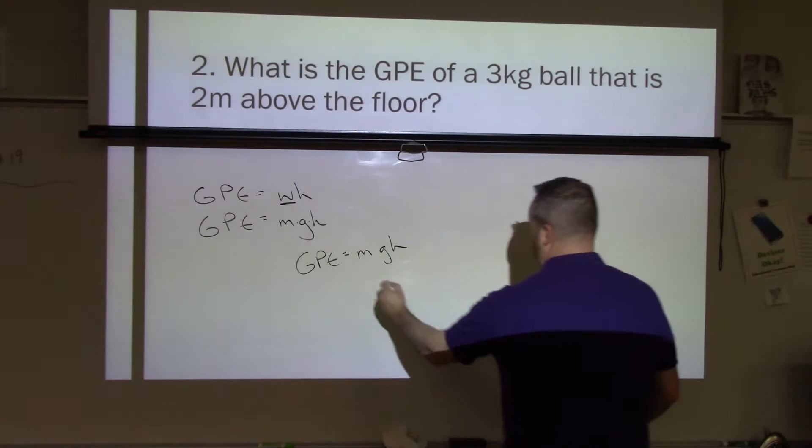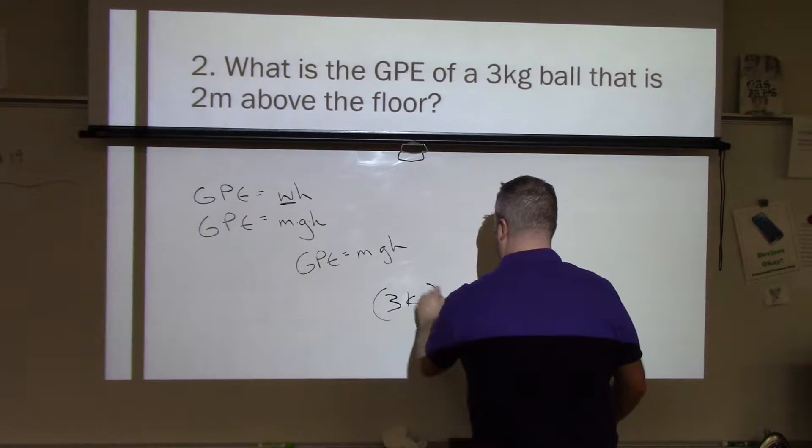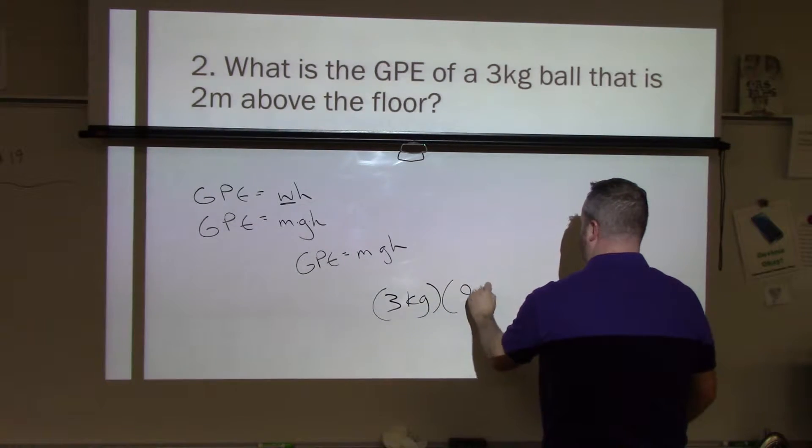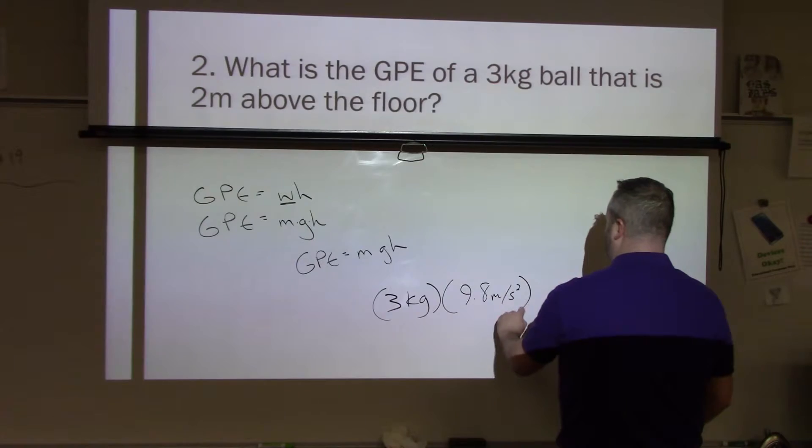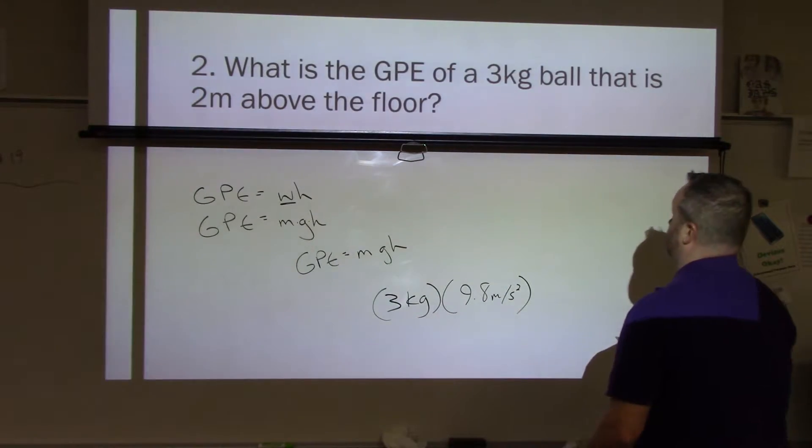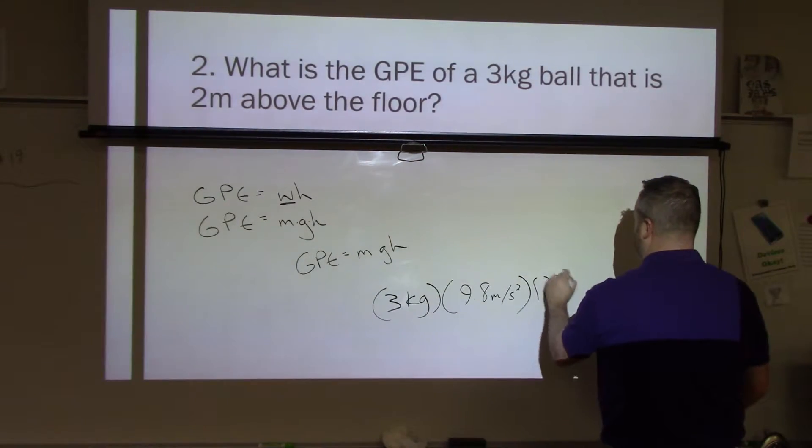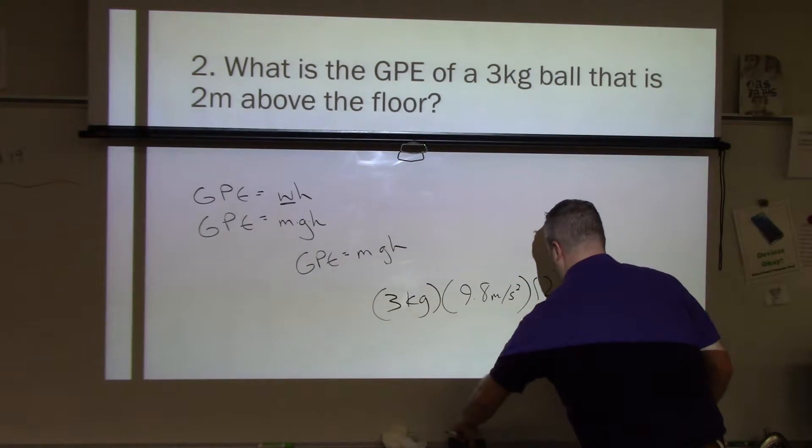So we have mass, which is three kilograms, gravity, which is 9.8 meters per second squared. I could have used 10, but I want to be precise here, just to show you. And then it's two meters above the floor. So that's two meters.